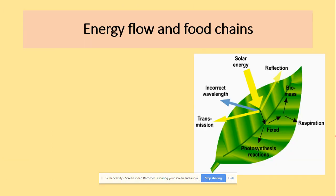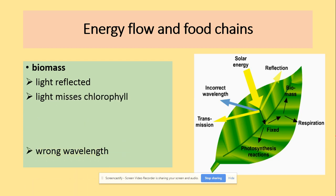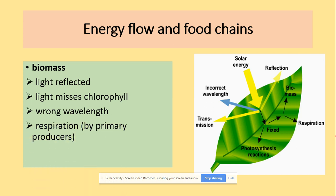Energy flow and food chains is something you need to be aware of. Biomass is produced by plants and this is affected by a few things. Sunlight is the main starting point, but light could be reflected — for example green light — or it could miss the chlorophyll, or be the wrong wavelength not absorbed by the chlorophyll. Respiration by producers also uses energy, and the inefficiency of photosynthesis is another factor affecting biomass.